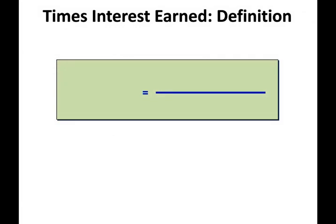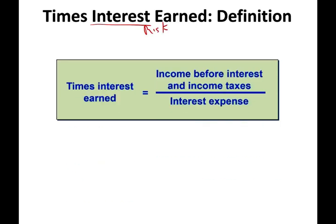The next topic is times interest earned. Every time you hear interest or debt, we are evaluating the risk of the company — because interest comes with debt and debt is risk. Times interest earned is computed by taking income before interest and taxes, known in the real world as EBIT (Earnings Before Interest and Taxes), divided by interest expense. This is the numerator called EBIT in financial statements.